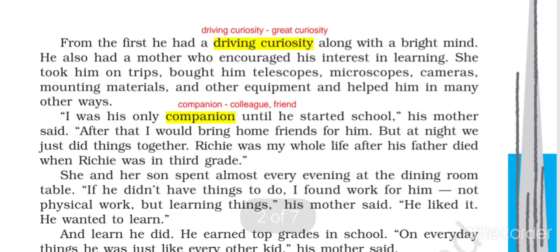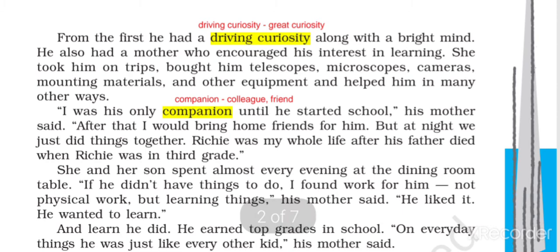From the first, he had a driving curiosity along with a bright mind. He also had a mother who encouraged his interest in learning. His mother encouraged him to learn more and more — she took him on trips, bought him telescopes, microscopes, cameras, mounting materials, and other equipment, and helped him in many other ways. Mounting material refers to things used to support telescopes and similar instruments. These things helped him to learn in many different ways, and his mother was very supportive.